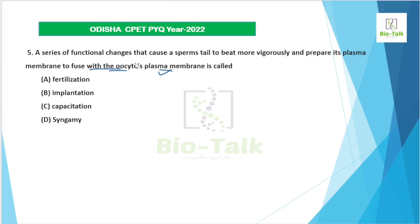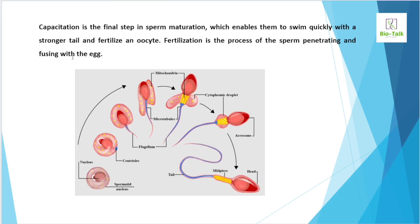The process of these functional changes in sperm is called capacitation. The question is asking about this process — it is not implantation. Capacitation is the final step in sperm maturation. The process involves changes in the male gamete after it enters the female reproductive tract, preparing it for fertilization.